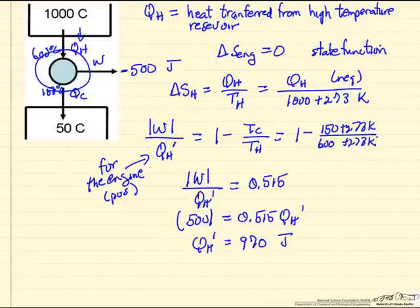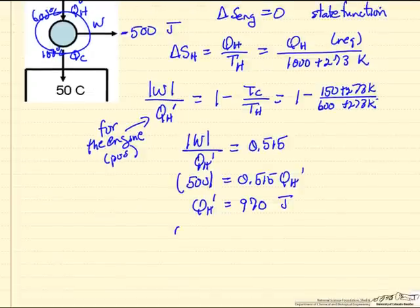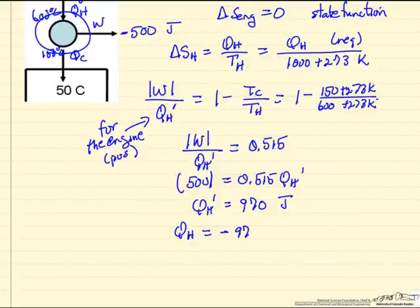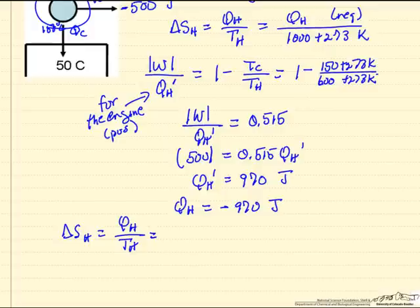Note that this is positive because we're looking at the engine, which means QH, the heat transfer from the high temperature reservoir, is negative 970. So we can go back and calculate the entropy change for this high temperature reservoir.